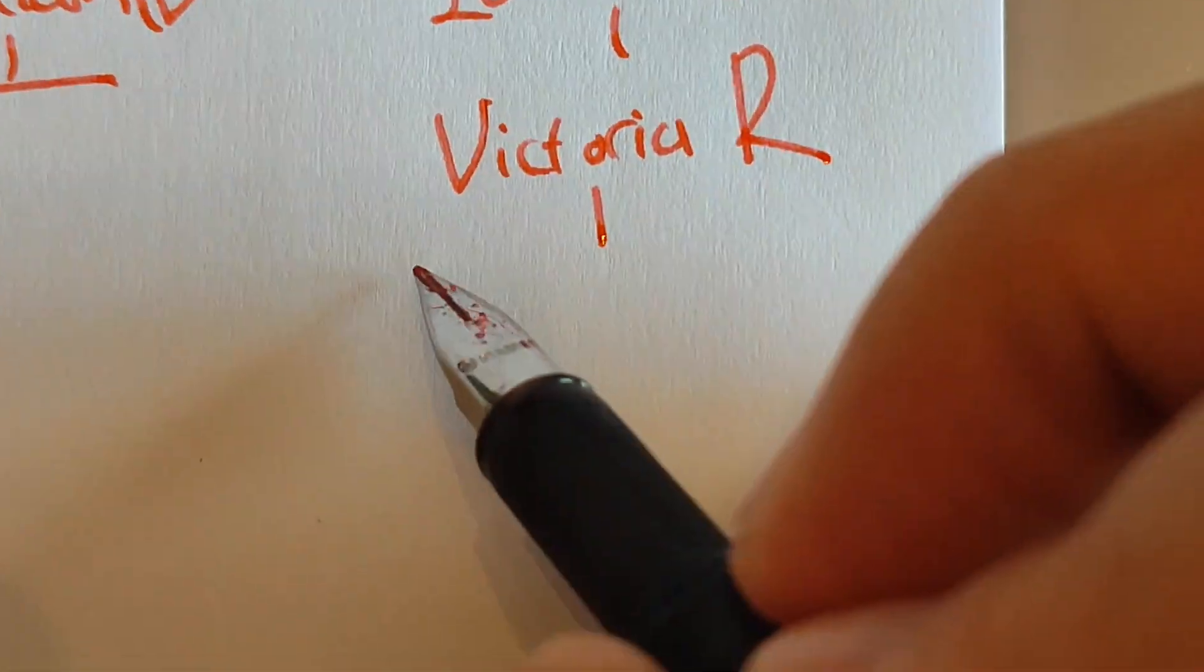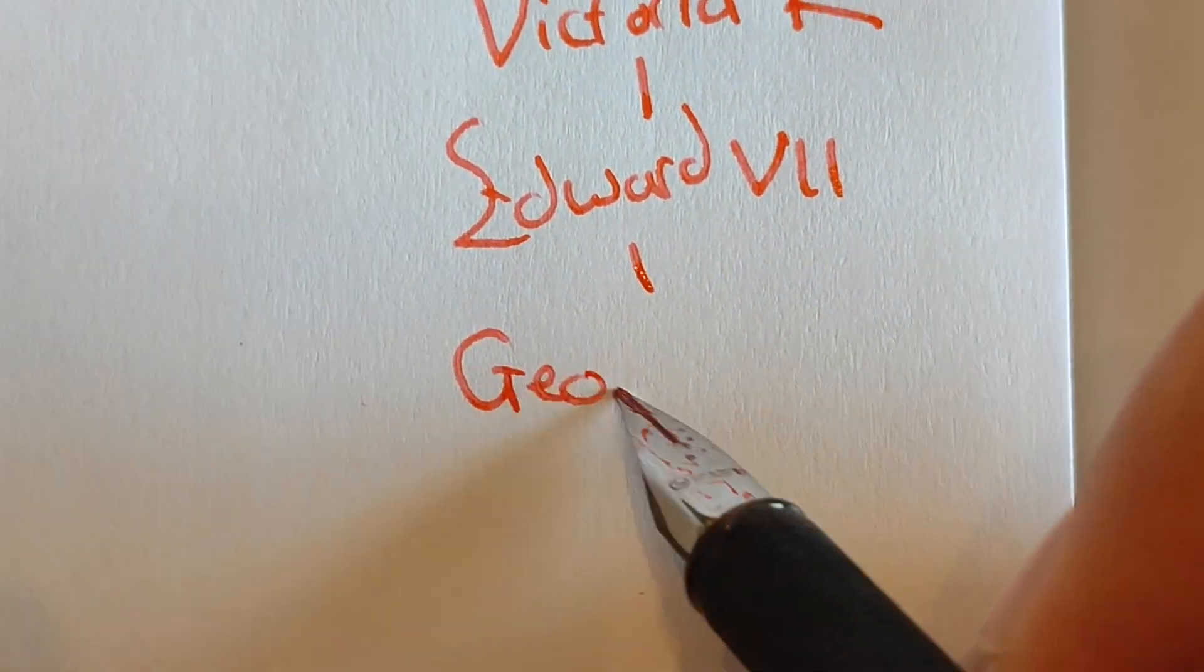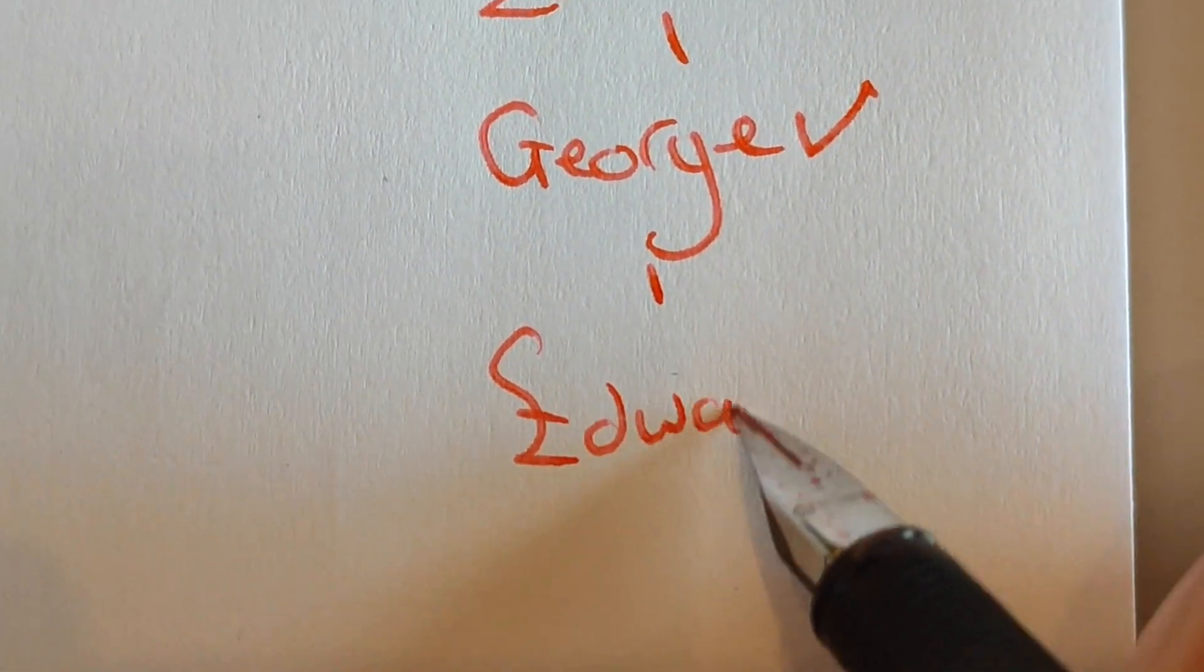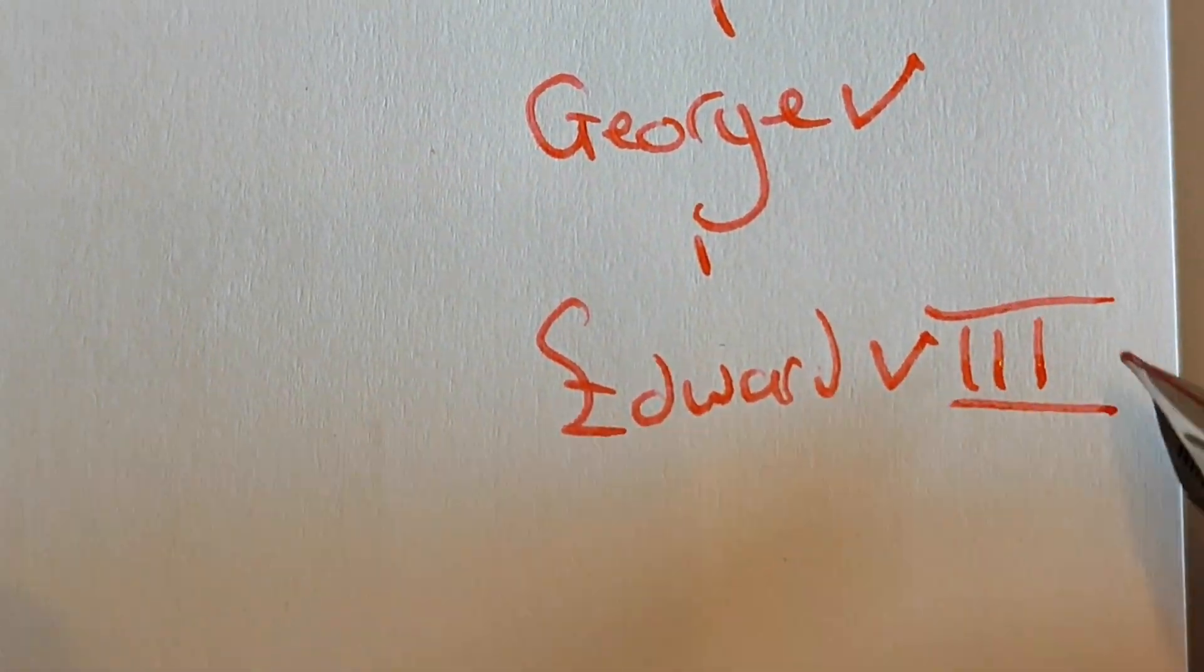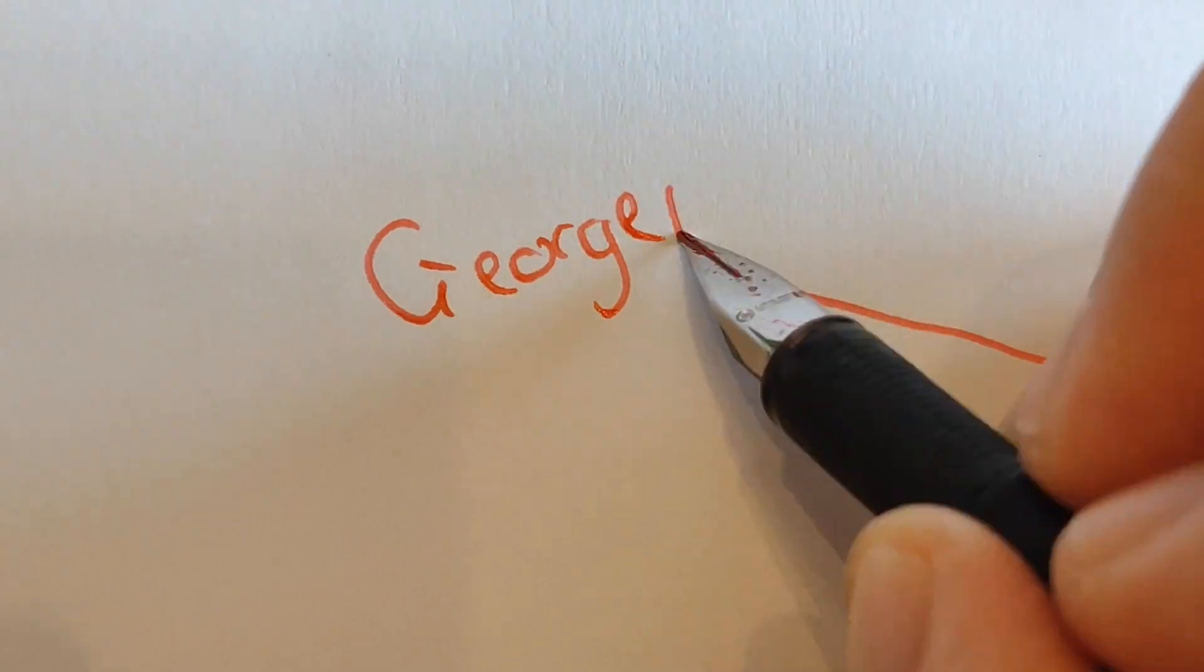She had a son called Edward VII, who had another son called George V, who had another son called Edward, that became Edward VIII, before he abdicated in favor of his brother, George VI, who was Queen Elizabeth II's father.